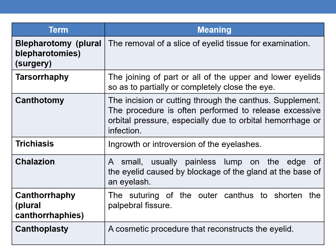The next term is canthotomy. Canthotomy is an incision or cutting through the canthus. This procedure is often performed to release excessive orbital pressure, especially due to orbital hemorrhage and infection.